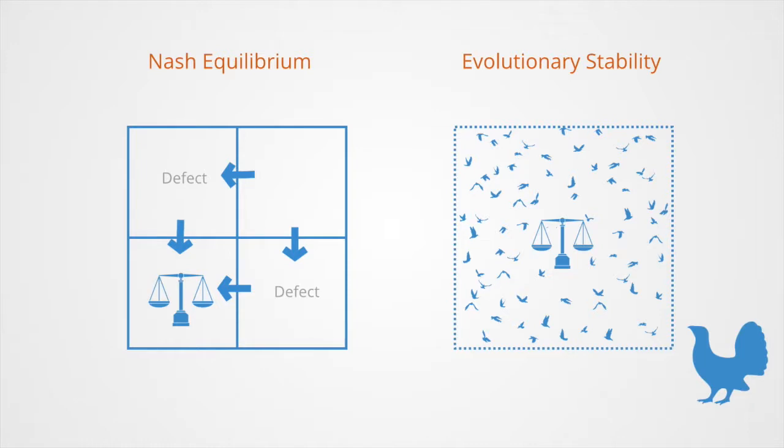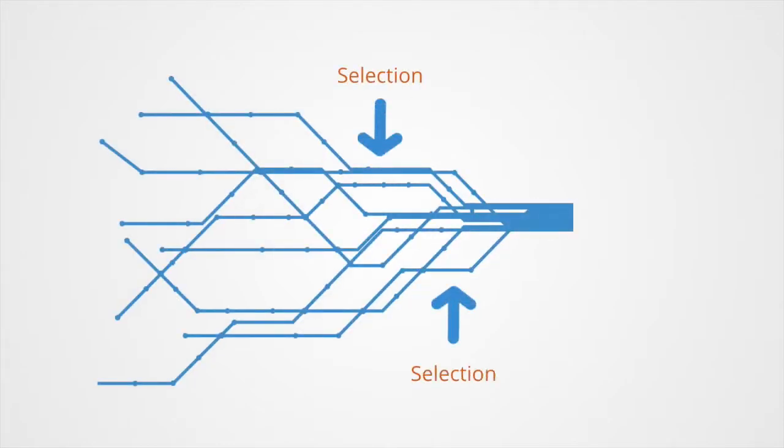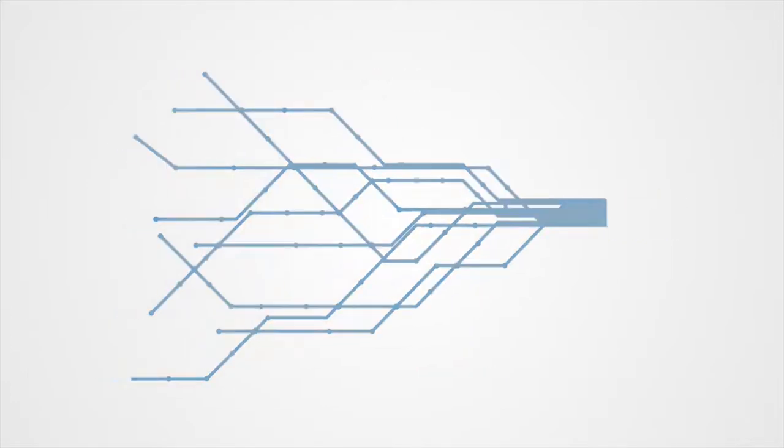Indeed, in the modern view, equilibrium should be thought of as the limiting outcome of an unspecified learning or evolutionary process that unfolds over time. In this view, equilibrium is the end story of how strategic thinking, competition, optimization, and learning work, not the beginning or middle of a one-shot game.